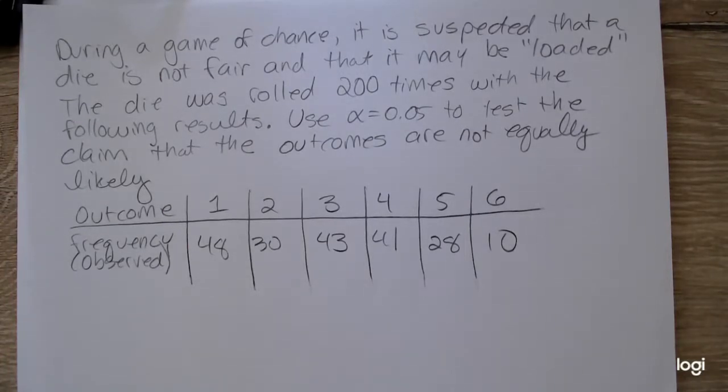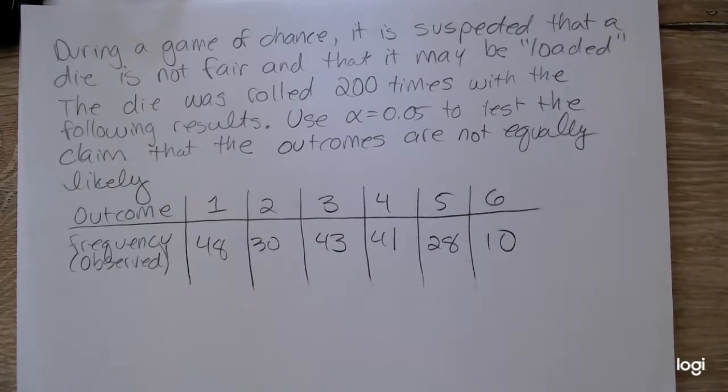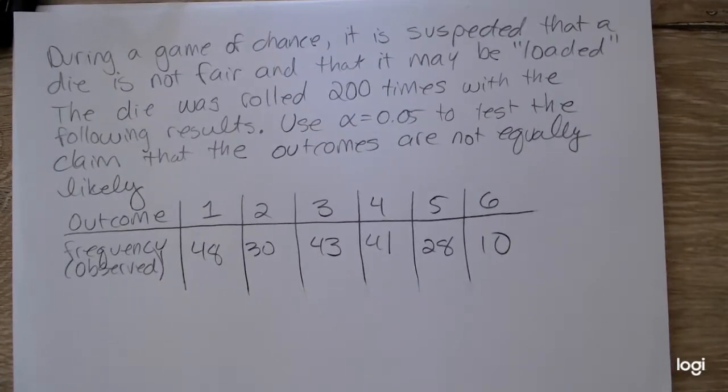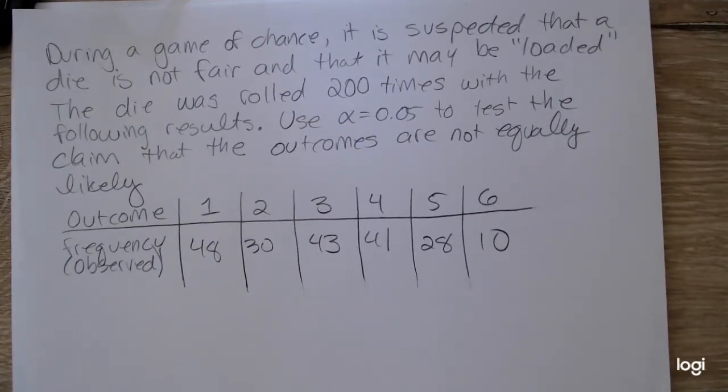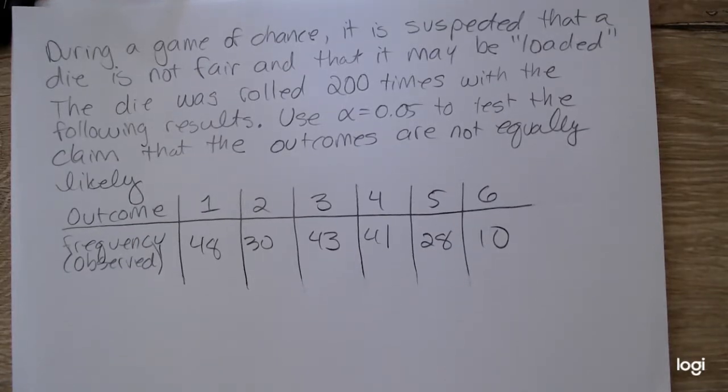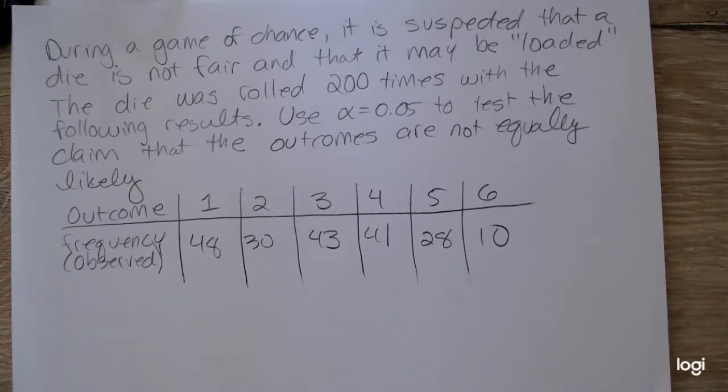During a game of chance, it is suspected that a die is not fair and that it may be loaded. The die was rolled 200 times with the following results. Use alpha equal 0.05 to test the claim that the outcomes are not equally likely.